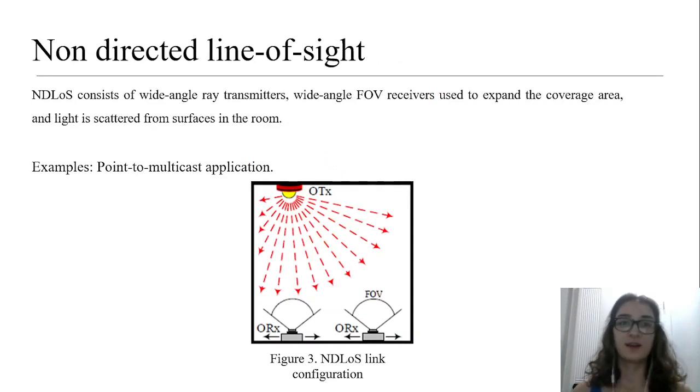Non-directed Line of Sight NDLOS consists of wide-angle beam transmitters and wide-angle field-of-view receivers used to expand the coverage area, and the light is scattered from the surfaces in the room. NDLOS Links are suitable for point-to-multicast application projects. Thanks to the reflections from the surfaces of the objects inside the rooms, they solve the blocking problem, and thus a high proportion of the transmitted light is perceived from a number of different directions in the photodetector. The NDLOS connection configuration is shown in figure 3.